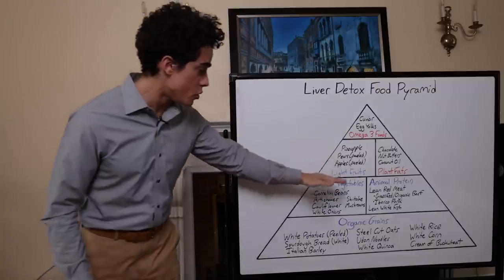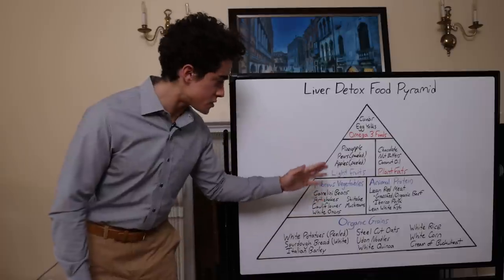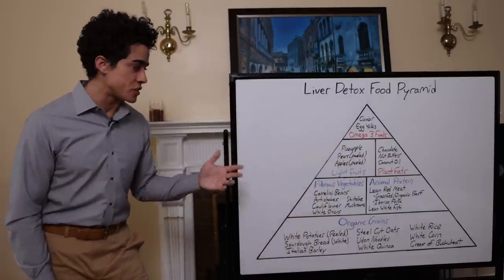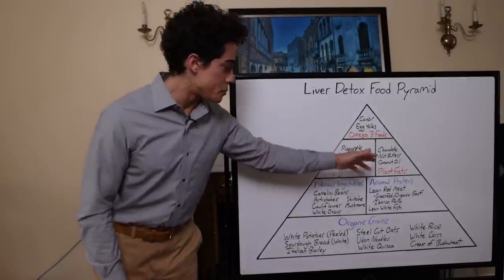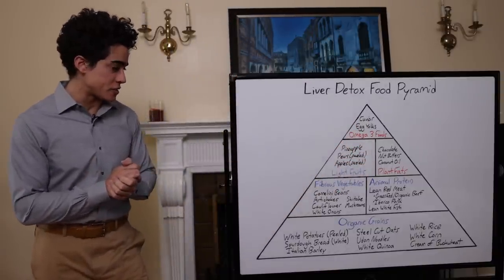Everything in blue - the organic grains, animal protein, organic vegetables, organic fruits - those should be eaten pretty much every single meal. The stuff in red, the plant fats and the omega-3 foods, might not want to have depending on your current health status.